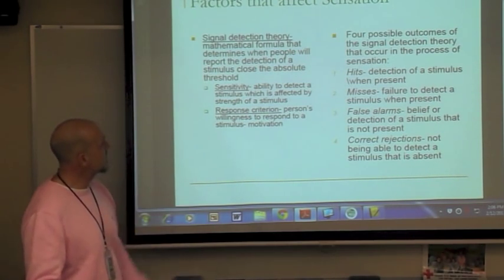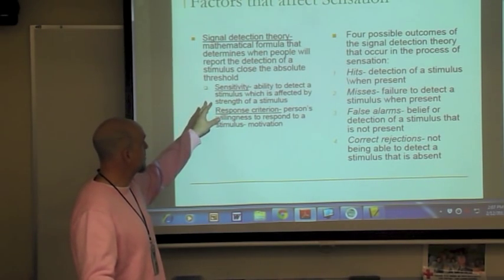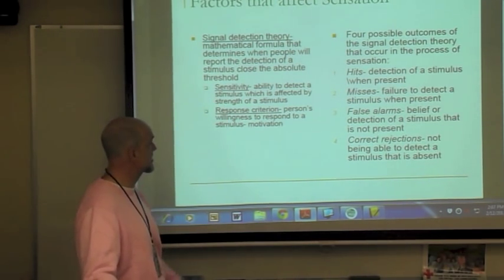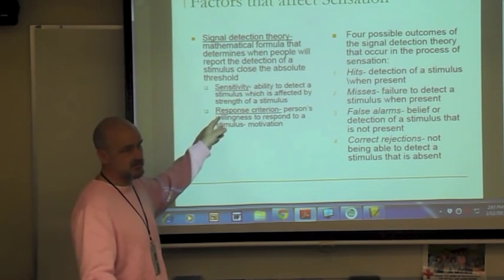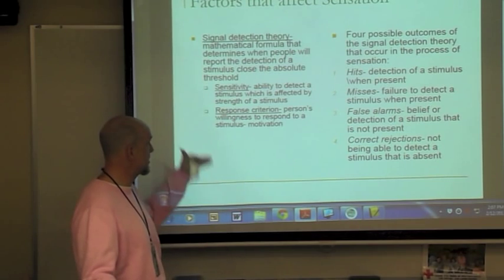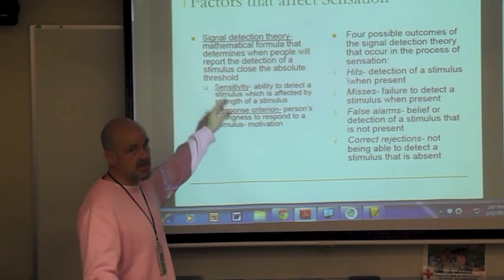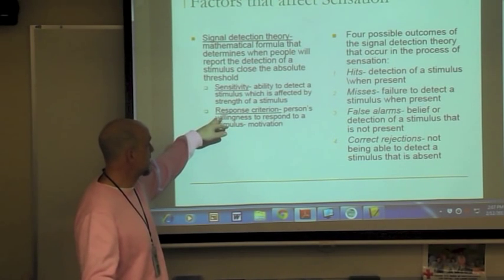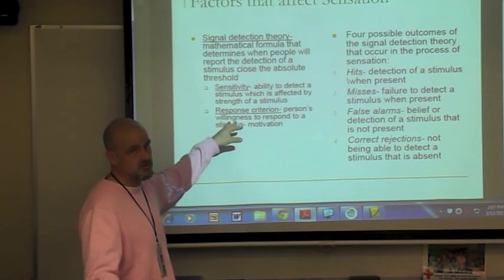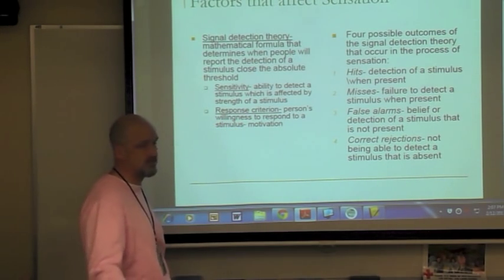Signal detection theory is a mathematical formula that determines when people report the detection of a stimulus. It takes into consideration two factors: sensitivity — the ability to detect the stimulus, affected by the strength relative to the absolute threshold — and response criteria, which is the person's willingness or motivation to respond to a stimulus.